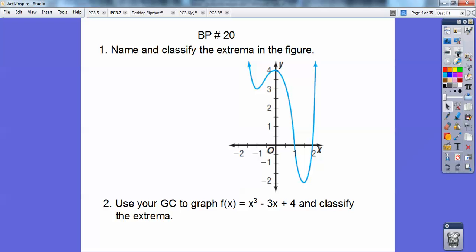So name and classify the extrema in the figure. The extrema we just got done discussing relative mins and maxes and absolute mins and maxes. So here I have a relative minimum here at x equals, looks like negative 1, y equals 3. Here I have a relative max at x equals 0, y equals 4. Here's another absolute minimum right there, because that's the lowest it goes right there.